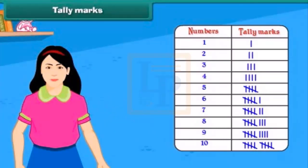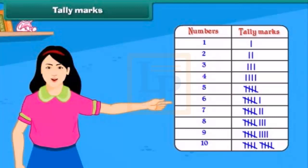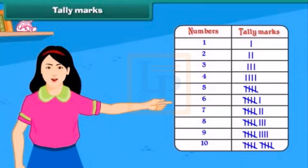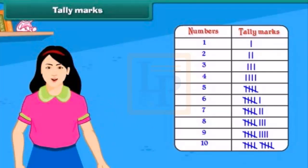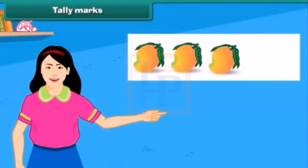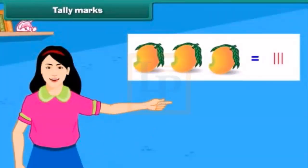For representing 2 objects, 2 vertical lines are drawn. Each mark represents an object. While representing 5 objects, 4 vertical lines are drawn and a 5th diagonal line cuts the 4 vertical lines. For example, to count 3 mangoes, we make 3 tally marks.